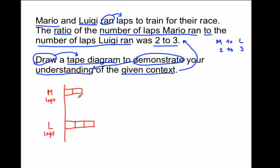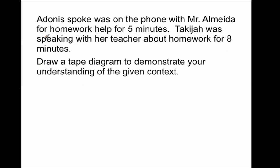Drawing this tape diagram, I can see that the ratio of Mario's units to Luigi's units is two to three — two units to two units to three units, Mario to Luigi. In this next problem, I'm going to see if you can draw the tape diagram. Why don't you pause the video and try to draw a tape diagram for this next model.